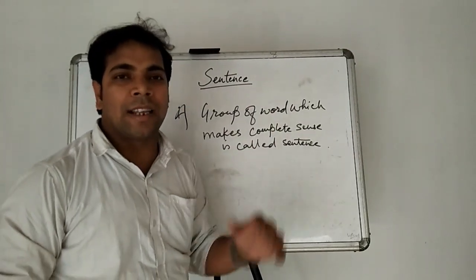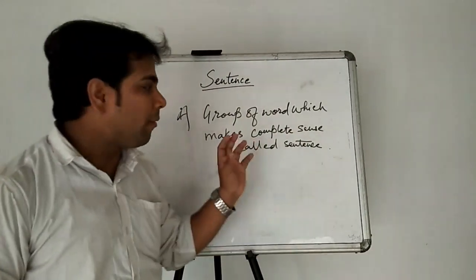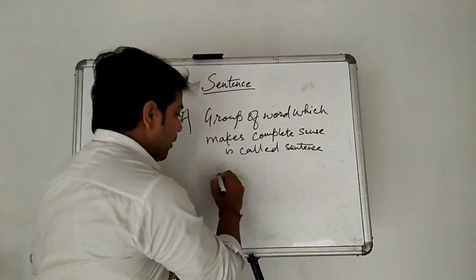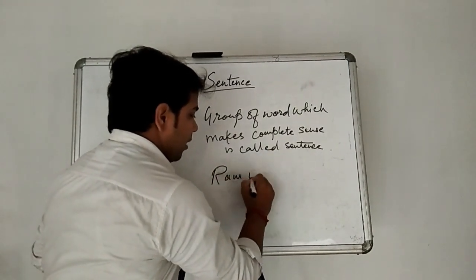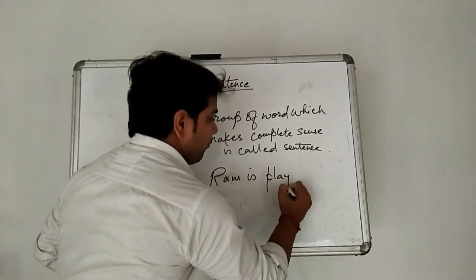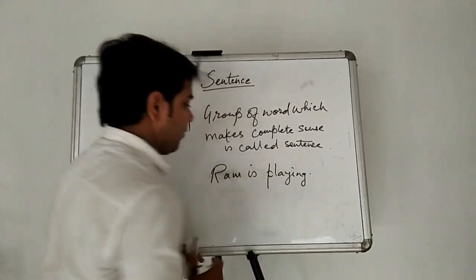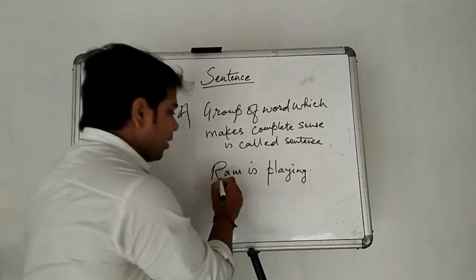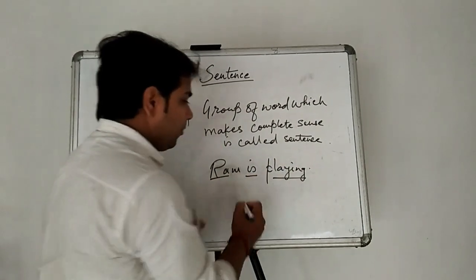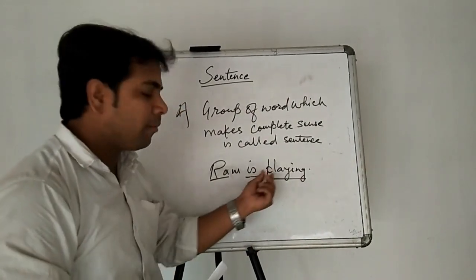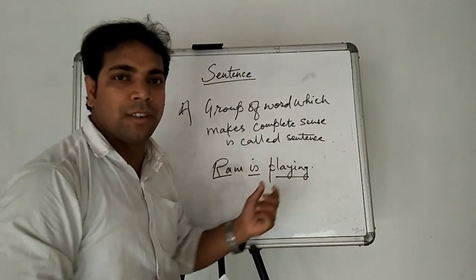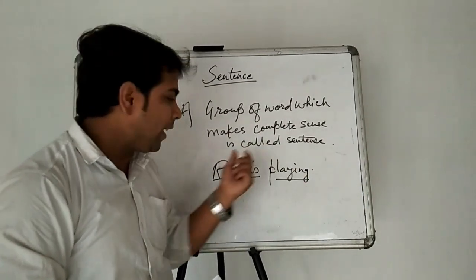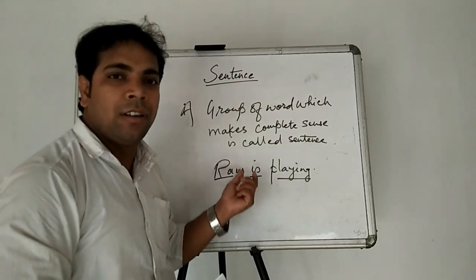Now we have to understand what is sentence — why a group of words is called sentence. Let us look at the example: Ram is plain. These are a group of words, but we have kept them in a string and it gives a meaningful sense. That we call sentence.